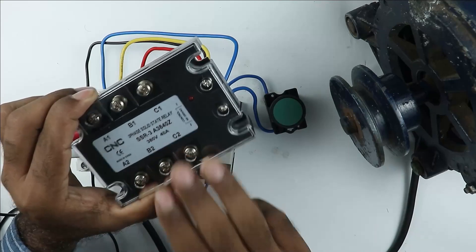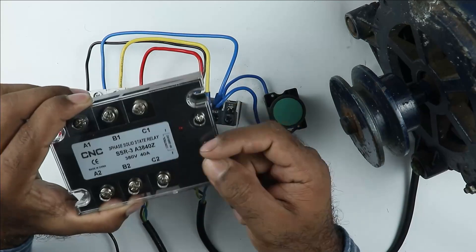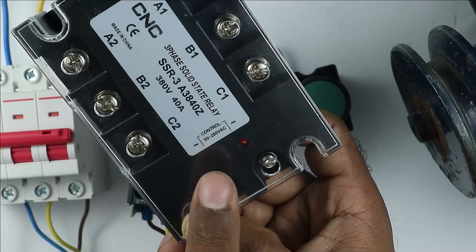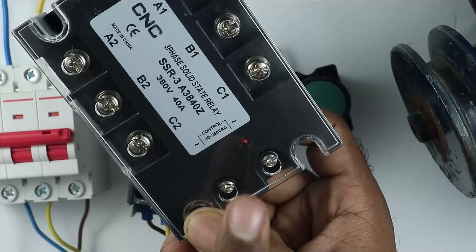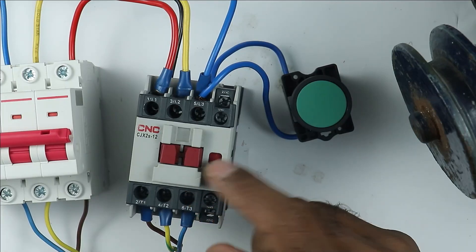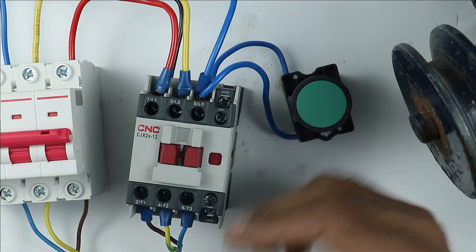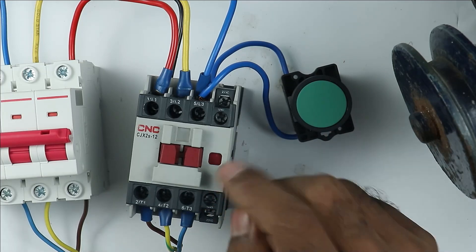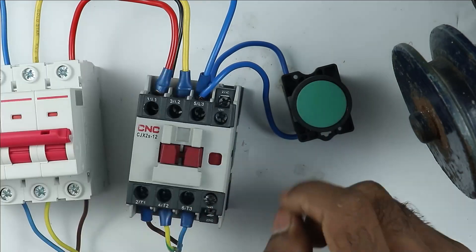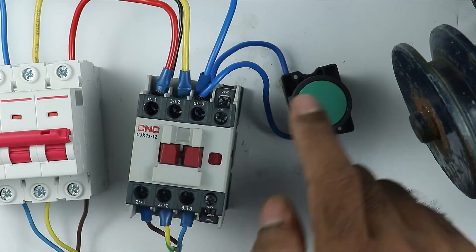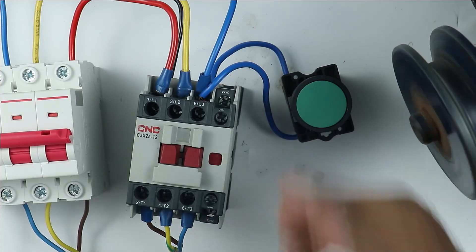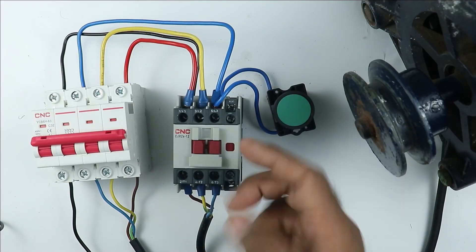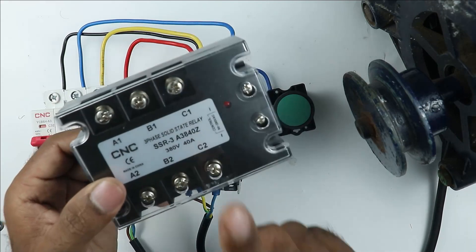Apart from this in the solid state relay the voltage to control this is much more. You can see on this relay here 90 to 280 volt AC is written. It means by providing 90 to 280 volt we can operate this relay. But in our contactor it is written 230 volt. Only 10% of 230 volt can be more or less as adjusted by the contactor. If you provide 90 volt power supply to contactor then it won't turn on. So the limitations I told you about contactor can be overcome by using this type of solid state relay.